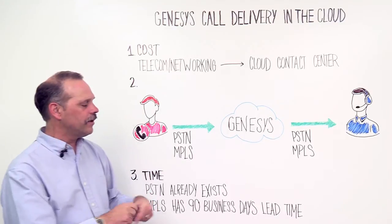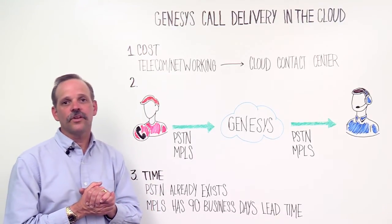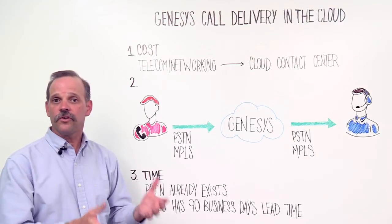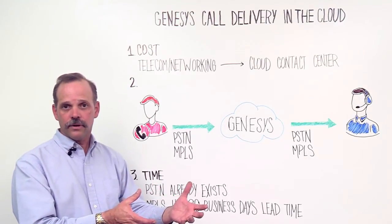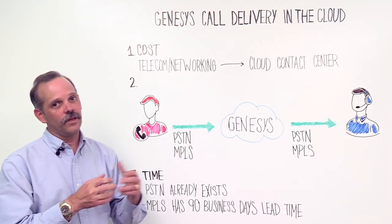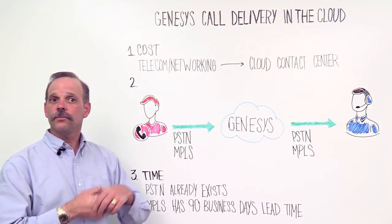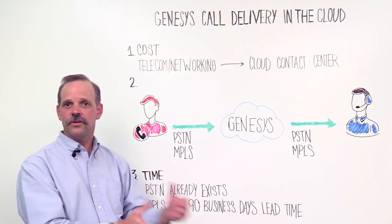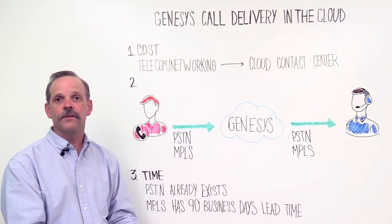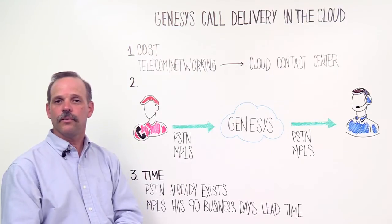And lastly, down here, we've got time. Normally it takes about 90 business days to install a data network such as MPLS, whereas the Public Switch Telephone Network can be used immediately. Quite a few customers have decided the best option is to use the Public Switch Telephone Network and then migrate to the MPLS network, which is the lower cost network, over time.